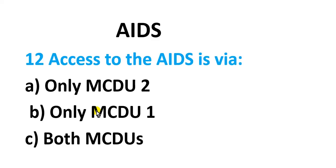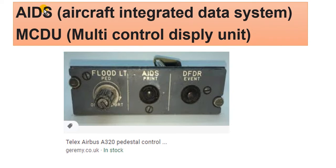Now the second question about AIDS: what does it stand for, and how is it accessed? The options are: via only MCDU number two, only MCDU number one, or both MCDUs. AIDS stands for Aircraft Integrated Data System.